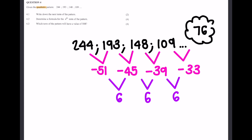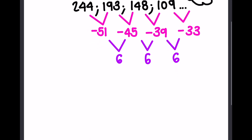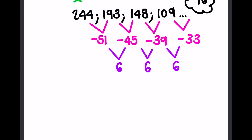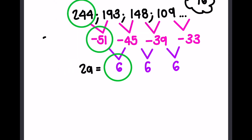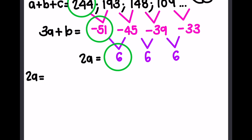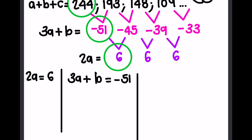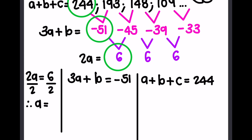The next question says determine the nth term of the pattern. To do this, we circle the first term of each row of differences and remember our formulas: 2a at the bottom, 3a plus b in the middle, and a plus b plus c at the top. So I'm going to rewrite these equations: 2a equals 6, 3a plus b equals negative 51, and a plus b plus c equals 244. If 2a equals 6, to isolate a I divide both sides by 2, so a equals 3.